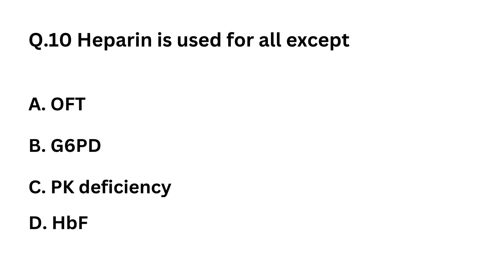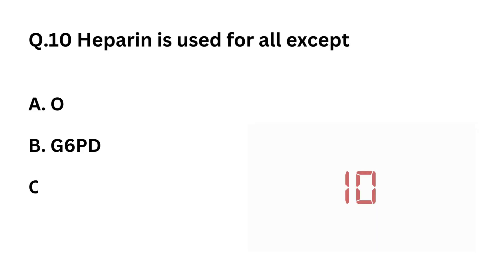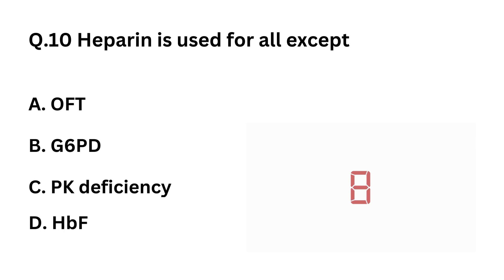Question 10: Heparin is used for all of the following except. Option A: OFT. Option B: G6PD. Option C: PK deficiency. Option D: HBF. The correct answer is Option D: HBF.